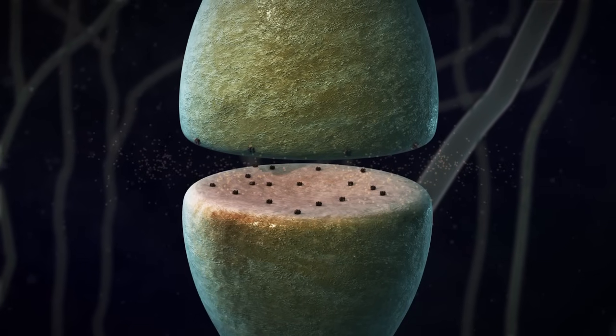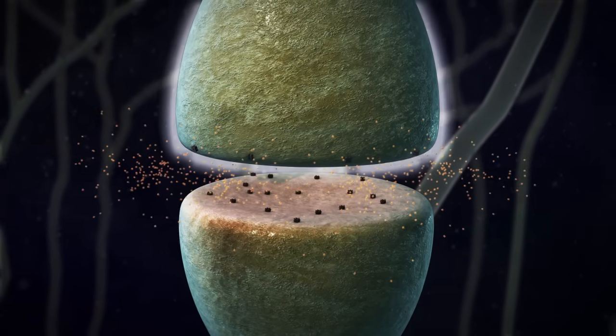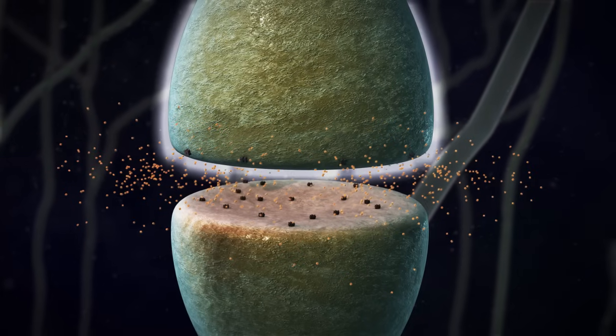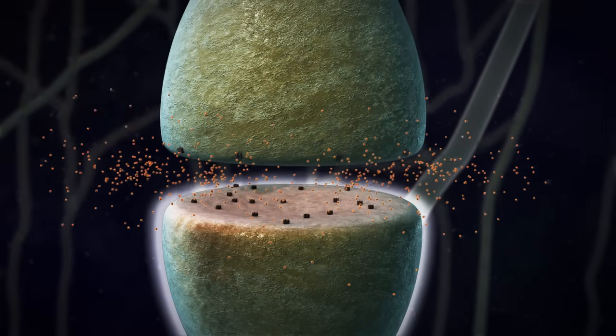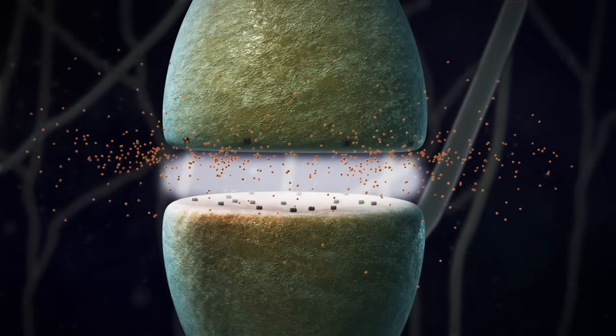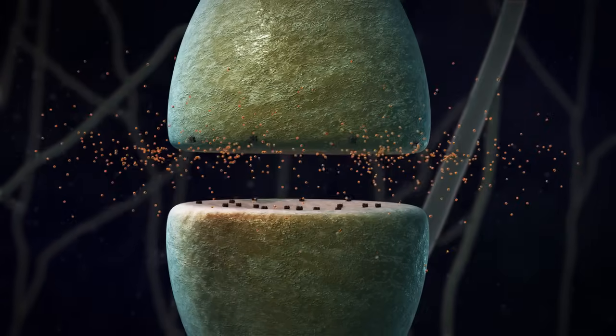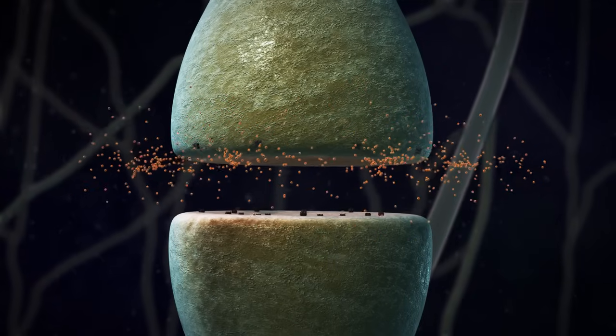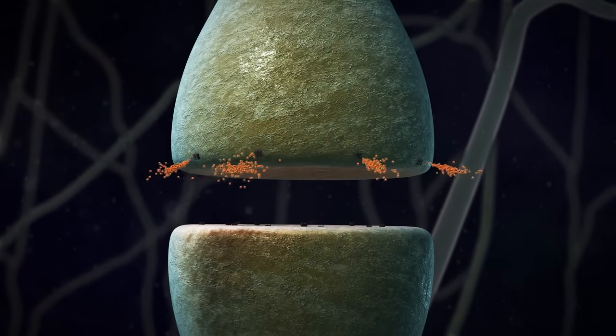The presynaptic neuron ends in a small bulb called the presynaptic terminal. The postsynaptic terminal membrane is directly adjacent, separated by a small space called the synaptic cleft. An action potential causes voltage-gated calcium ion channels to open in the presynaptic terminal.